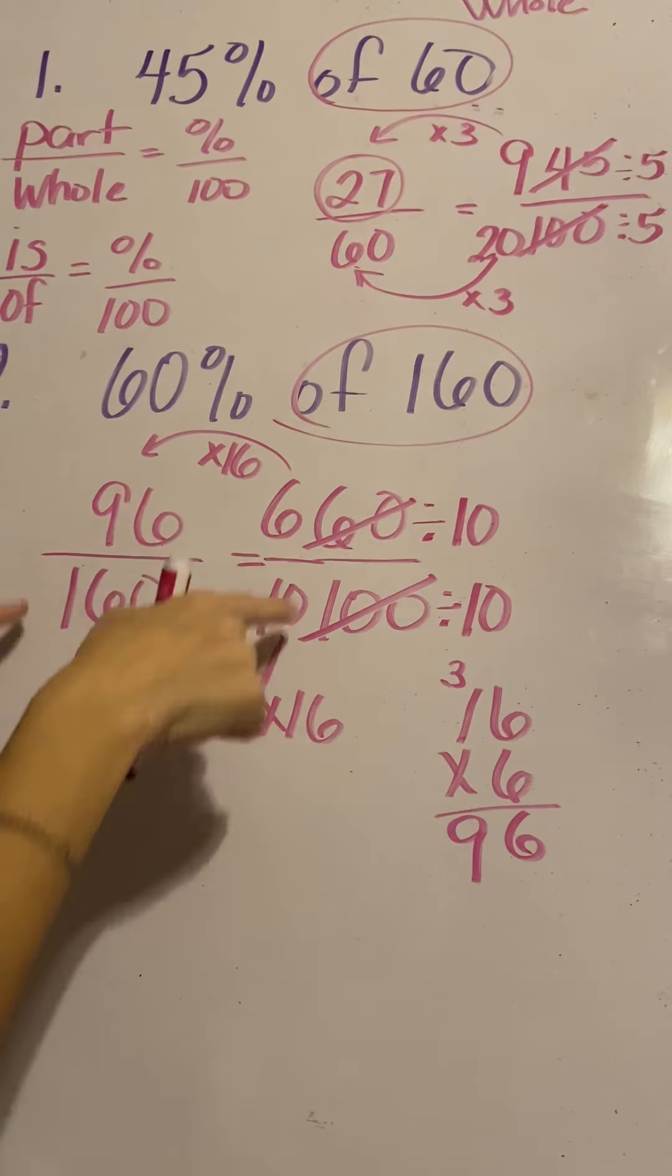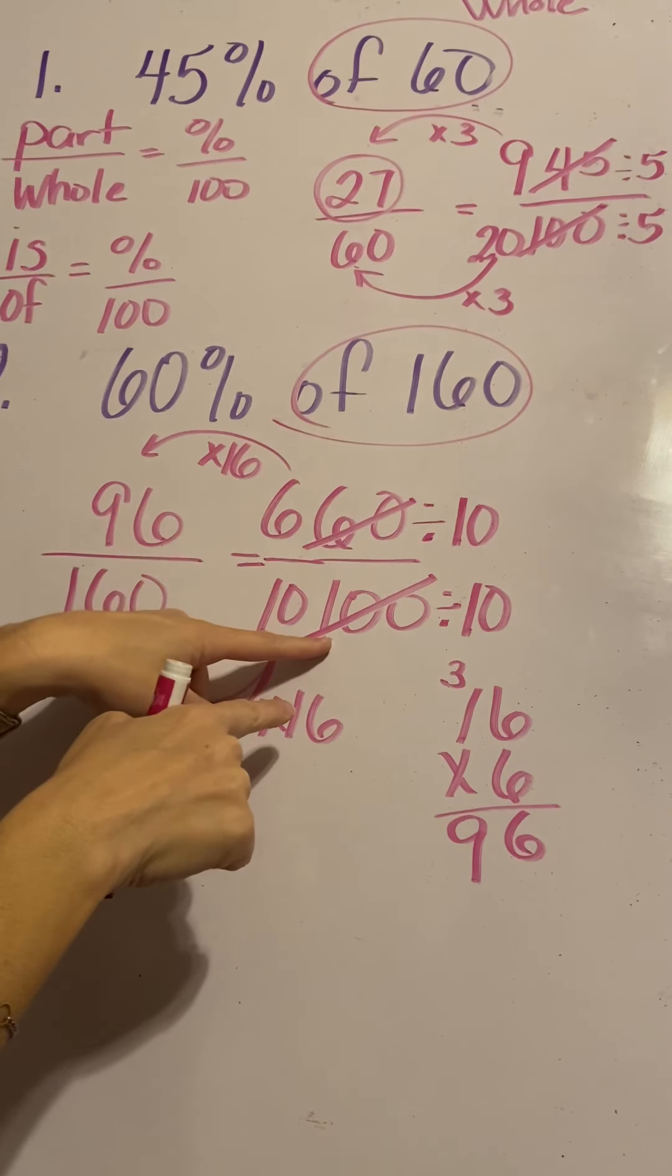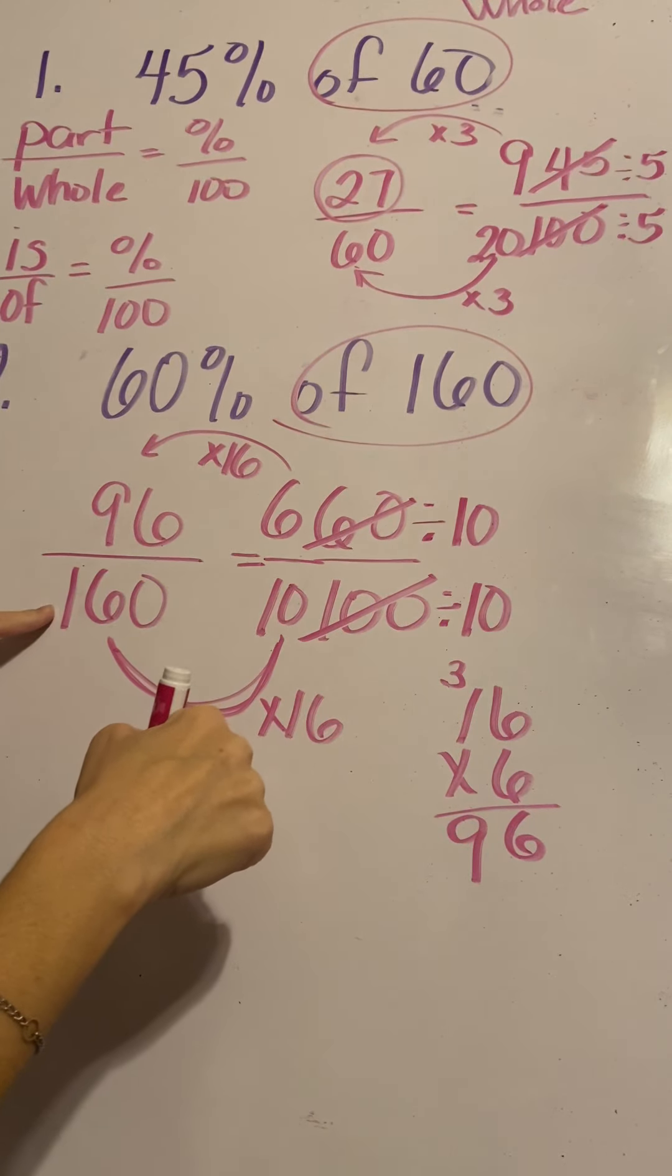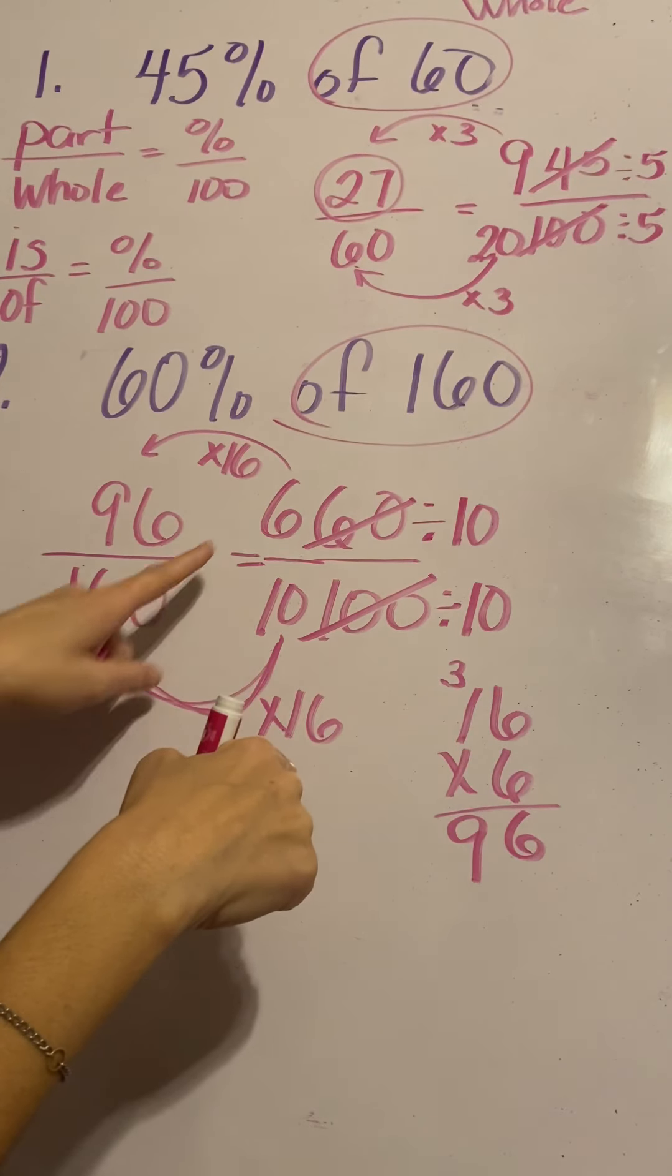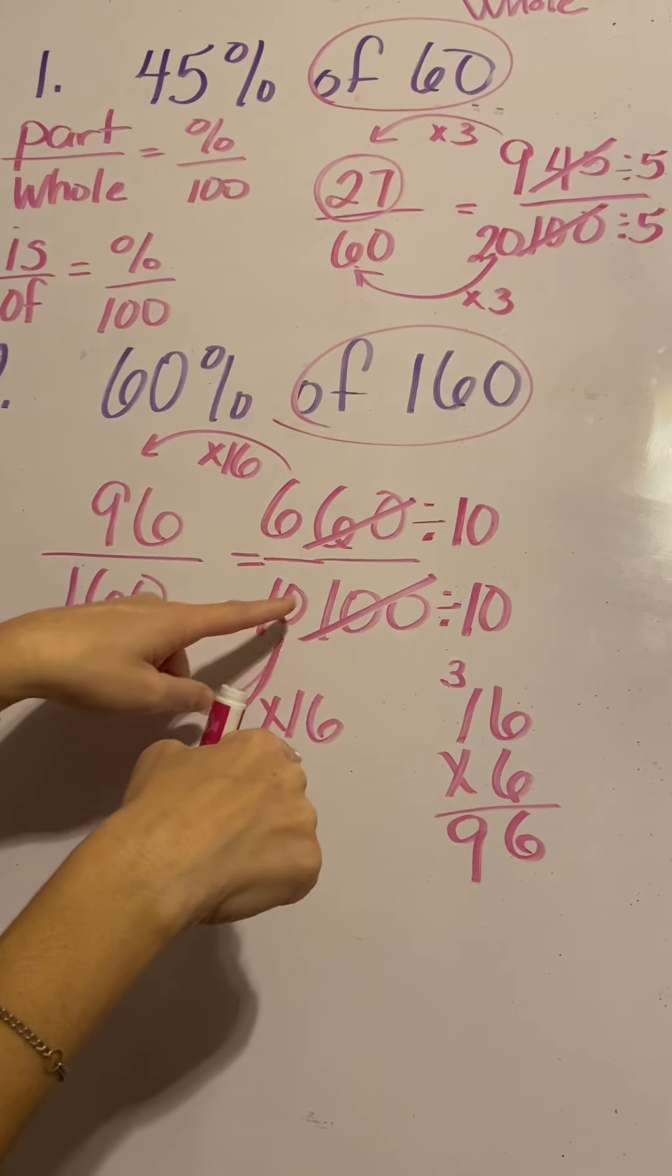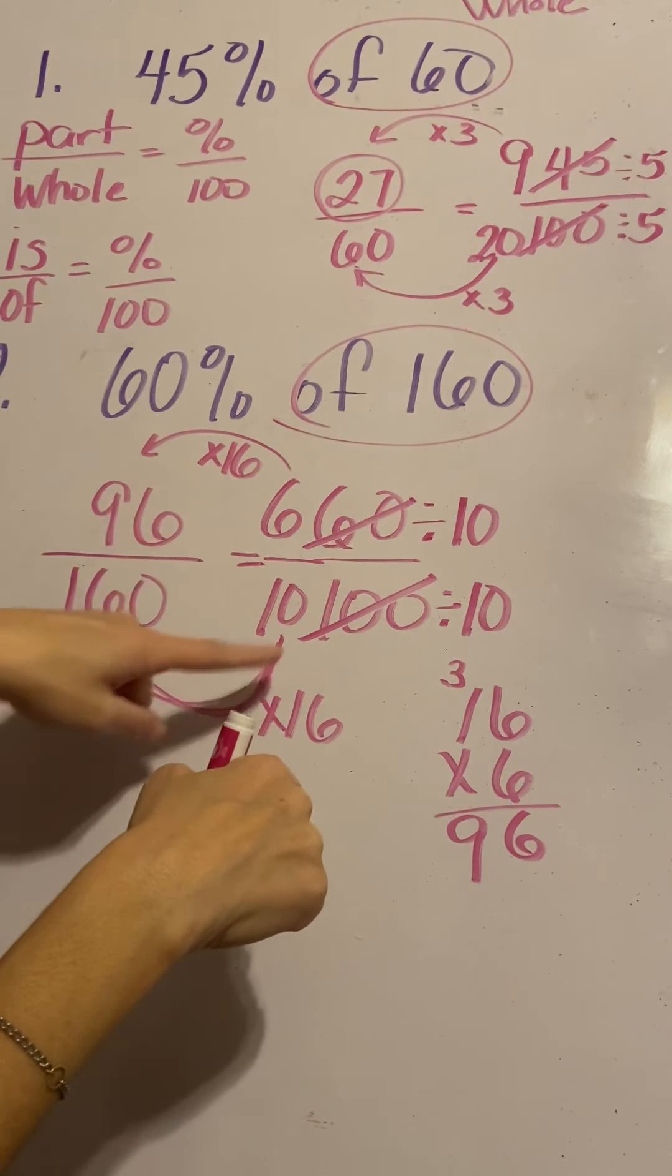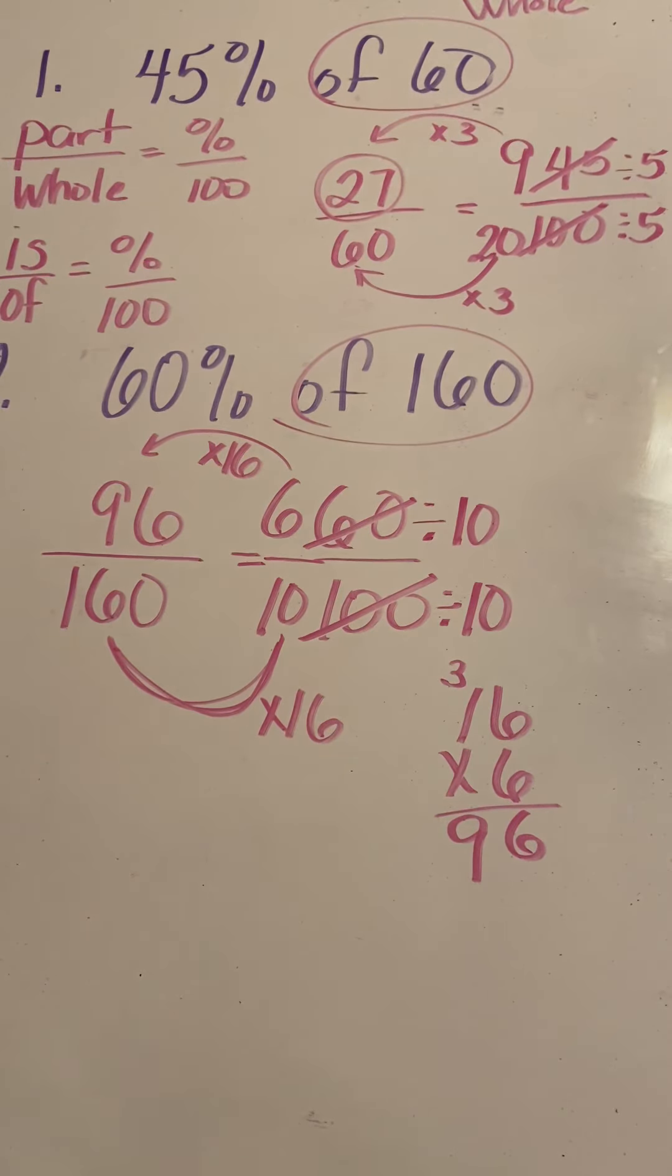So we're setting up a proportion. Part over whole equals percent over 100. On all the questions today, we didn't know the part, but we knew the whole. See if something will multiply, if it won't simplify this fraction, and then see if you can find something that multiplies and do the same thing to the top that you did to the bottom. Okay. Let me know if that doesn't help and I will send something else.